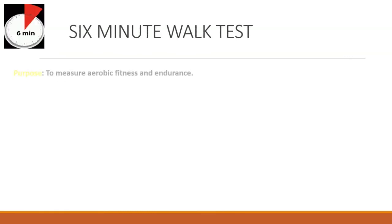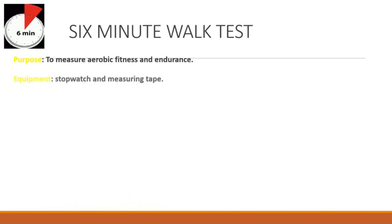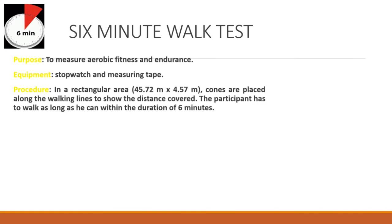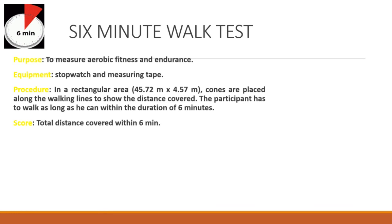6 Minute Walk Test. Purpose: To measure aerobic fitness and endurance. Equipment: Stopwatch and measuring tape. Procedure: In a rectangular area of 45.72m x 4.57m, cones are placed along the walking lines to show the distance covered. The participant has to walk as long as possible within the duration of 6 minutes. The total distance covered within 6 minutes is recorded as the score.